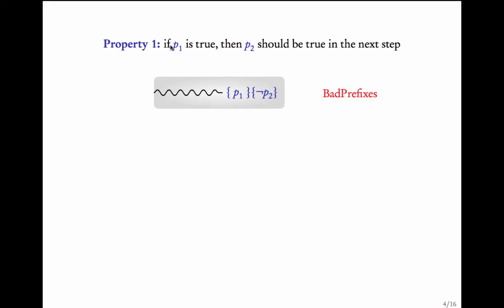Look at Property 1, which says that if P1 is true then P2 should be true in the next step. What could a bad prefix for this property be? A bad prefix will be a word where at some point P1 is true and in the next letter P2 is false. So these are all words over sets of atomic propositions. Suppose you reach a set where P1 is present and following this there is a set where P2 is absent — this will be bad for Property 1. So this is a bad prefix, and this could be followed by any word.